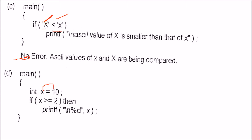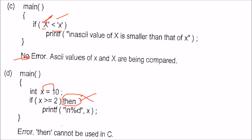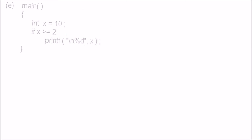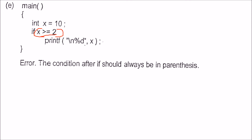x equals 10, x greater than or equal to 2, then — 'then' is not allowed in C. There is nothing called 'then' in C. Also, where is the round bracket? The parentheses are missing from the if condition — that is the error.